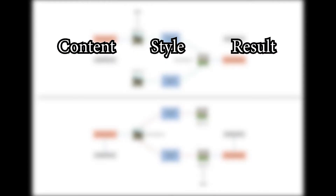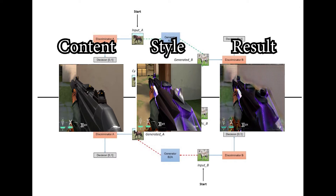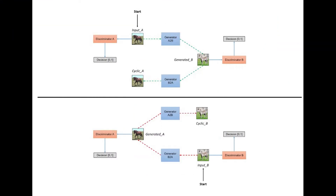As for Valorant skins, the focus of this video, this would mean taking an image of a gun with a skin as a style, and transferring that style to an image of the same gun without the skin. For this, I'll be using CycleGAN, a model that works pretty well when you want to swap textures but keep the overall structure the same in an image.